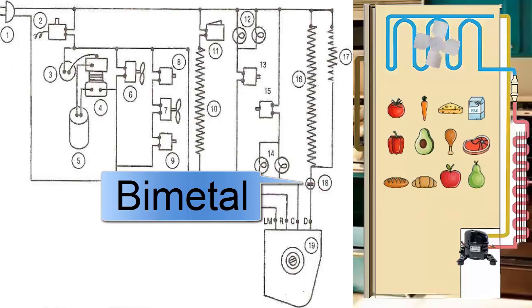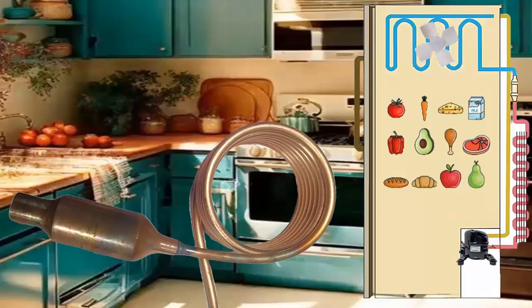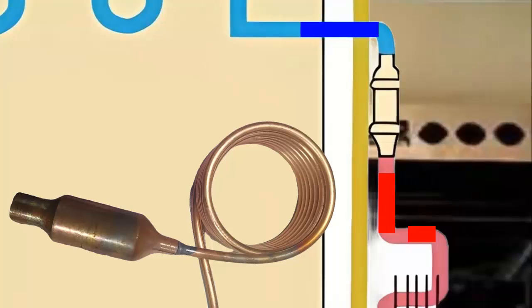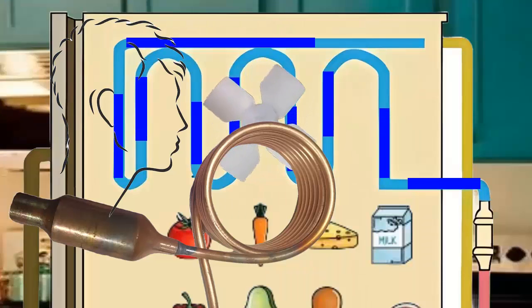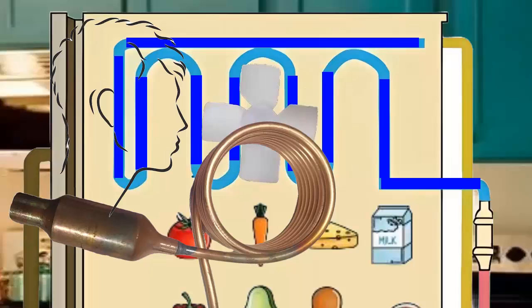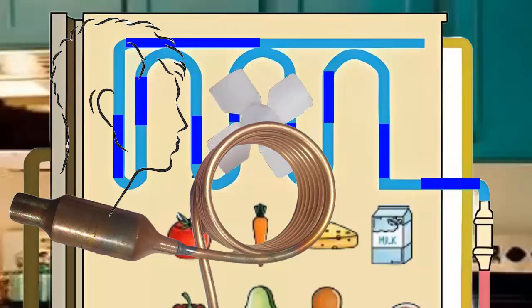Method 6: Observation of the Capillary Tube. Observe if there is freezing in the capillary tube or only parts of the freezer evaporator. In this case, the problem is an internal obstruction in the capillary tube or some internal tube of the evaporator.